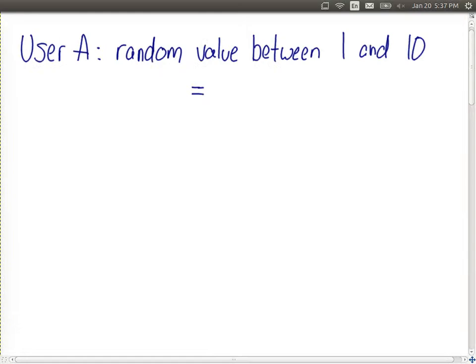Consider an example. Let's say we have a user, user A, and they have chosen a random value between 1 and 10, inclusive. And in this case, let's say they chose the value 7.